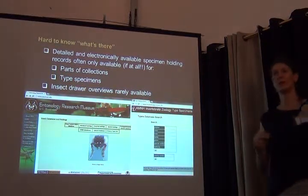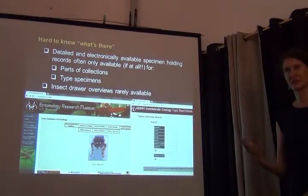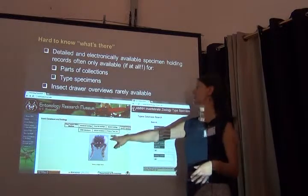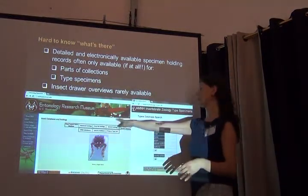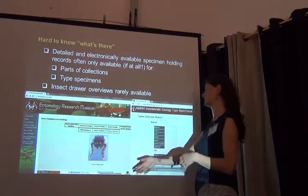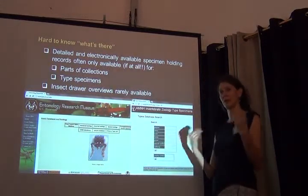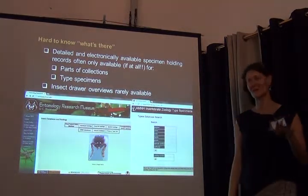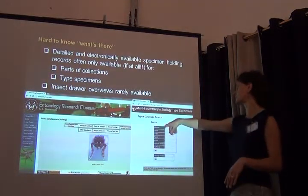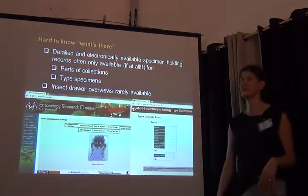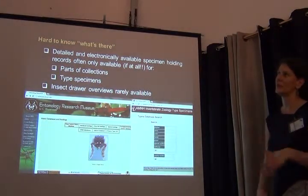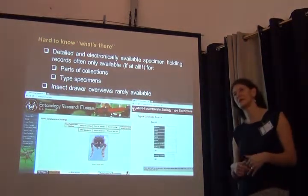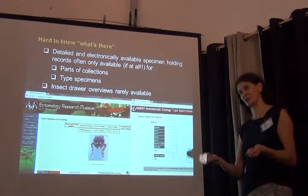Databases may only be available for parts of a collection that someone is particularly interested in, or for type specimens. Here are two examples. This is from our own museum, the Anthropological Research Museum in Riverside. We have accessible databases on our webpage for certain insect groups we're particularly interested in and have had projects on. Quite exceptional, at least in the insect world, the American Museum of Natural History has a type specimen database that it made available about 10 years ago. It lists not only all the type specimens but also shows images of the great majority of them.